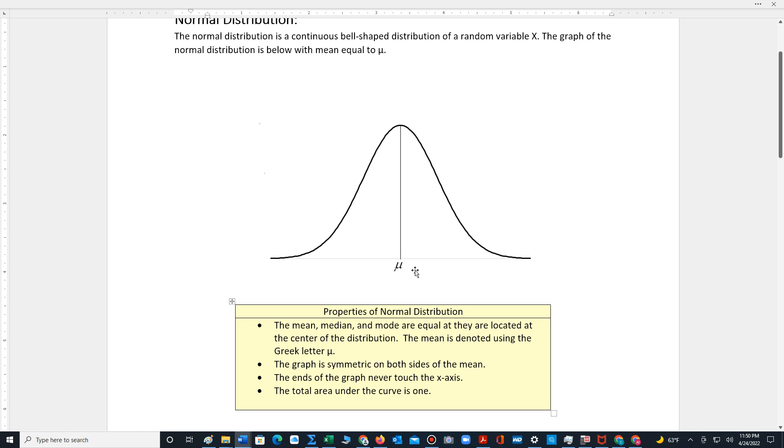The graph is symmetric on both sides of the mean. If we cut the distribution down the center, we would have two equal pieces. This symmetry plays a role in computations involving the distribution.